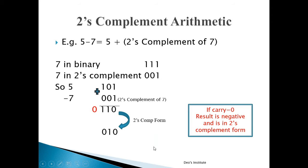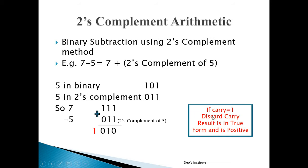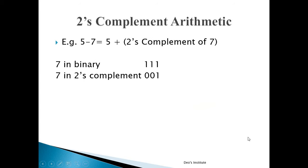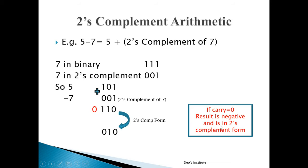Remember these two rules. If carry is 1: discard the carry — the result is in true form and is positive. If carry is 0: the result is negative and is in 2's complement form, so take the 2's complement of the result and that number, made negative, is your final answer.